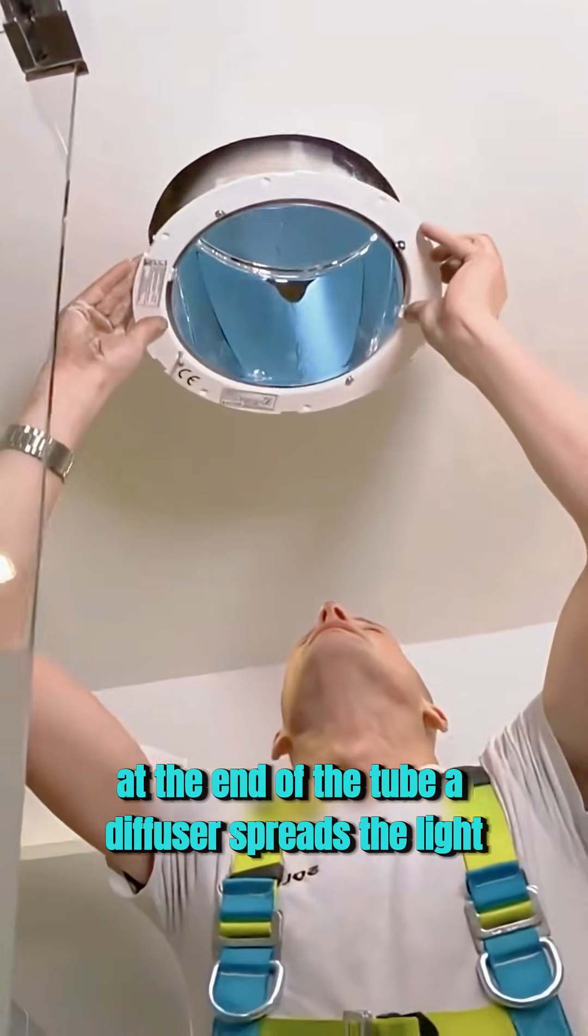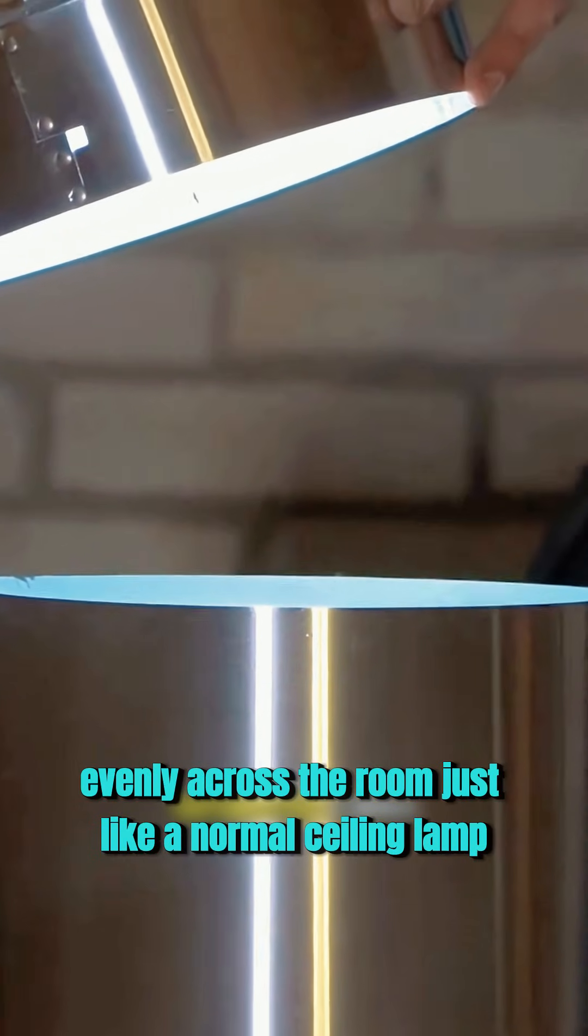At the end of the tube, a diffuser spreads the light evenly across the room, just like a normal ceiling lamp.